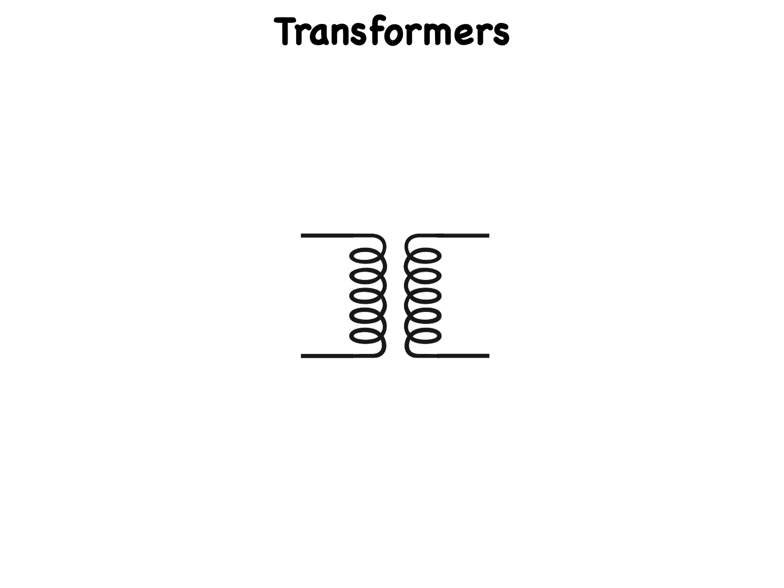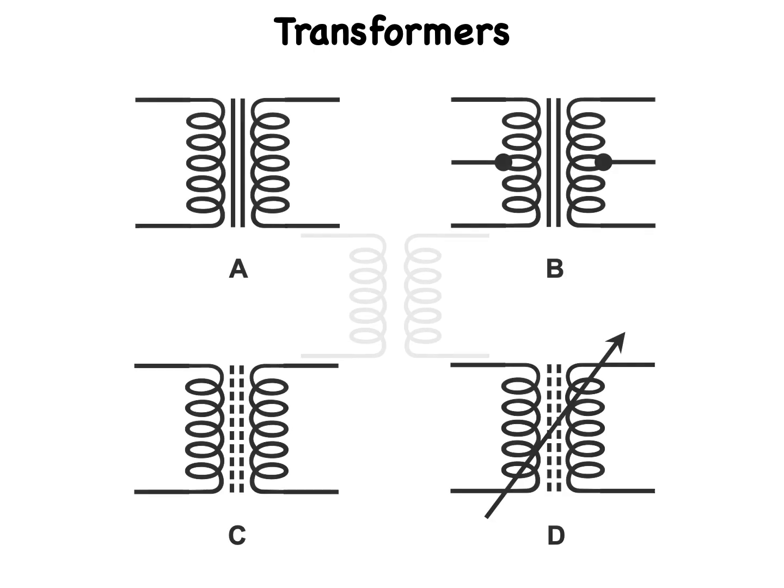A transformer has the ability to transfer AC energy from one circuit to another at the same frequency. Because transformers are made by combining inductors, the schematic symbols are similar. Here we see some transformers that contain iron cores. The ones at A and B have solid or laminated cores; the ones at C and D have powdered cores.